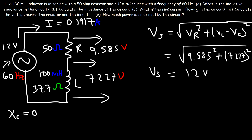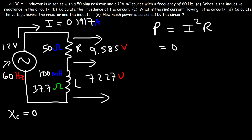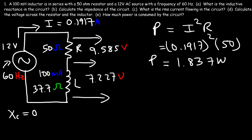Now let's move on to the last part: how much power is consumed by the circuit? The inductor absorbs energy but then releases it back, so there is no net energy loss with the inductor. The resistor only takes energy and doesn't give it back, so the resistor is what consumes power in the circuit. The power consumed equals I² times R — 0.1917² times 50 ohms — giving 1.837 watts.